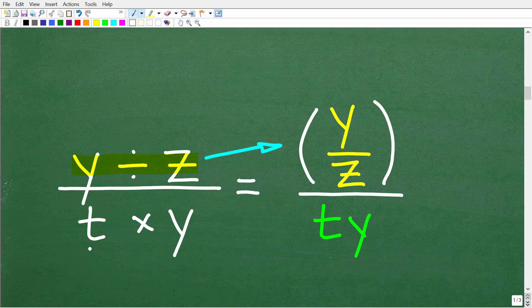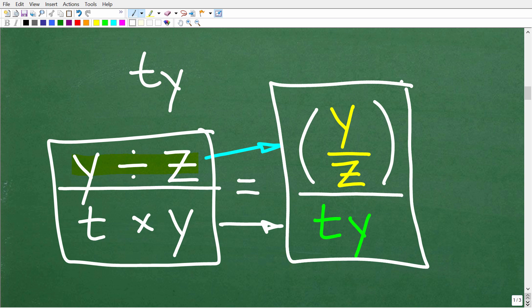Now down here in the denominator, I have t times y. And in algebra, when you want to multiply one variable by another variable, you simply just write those two variables next to one another. So ty is the same thing as t times y.